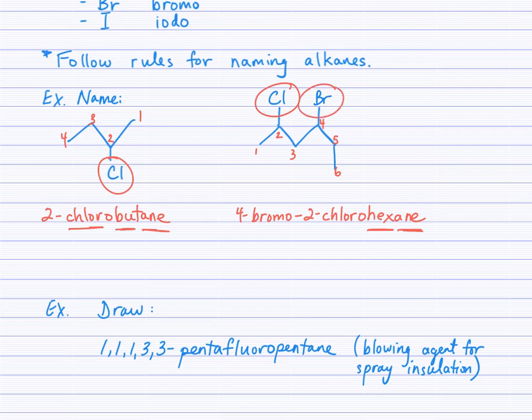I'm not worried about the bromo having the lower number, because when I number from left to right, the side groups are on carbons 2 and 4. If I had numbered from right to left, then they would have been on 3 and 5. Well, 2 and 4 is definitely the preferred numbering, so that's what I do no matter what. And now when I sequence the prefixes, I just have to make sure that the bromo comes before the chloro.